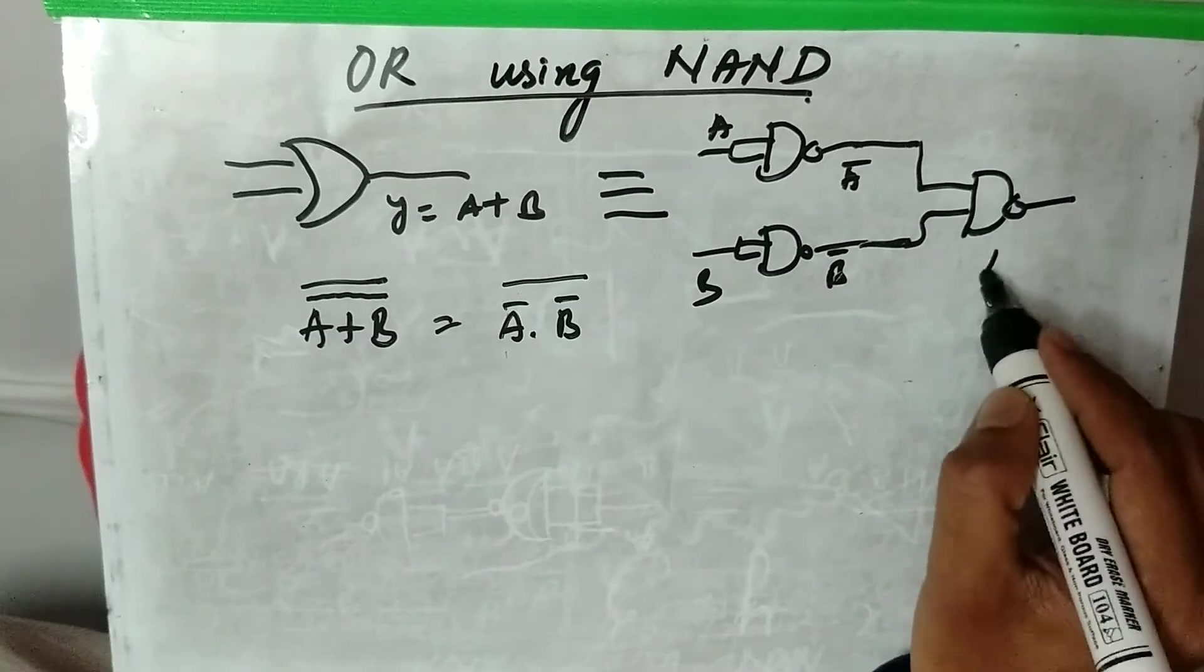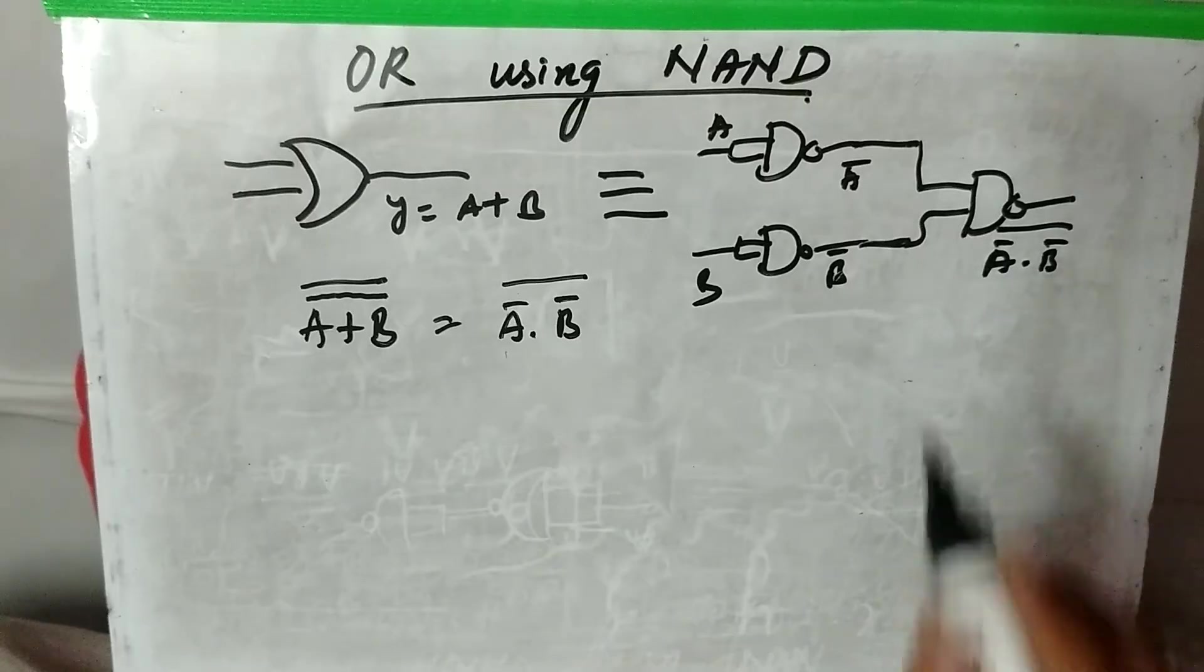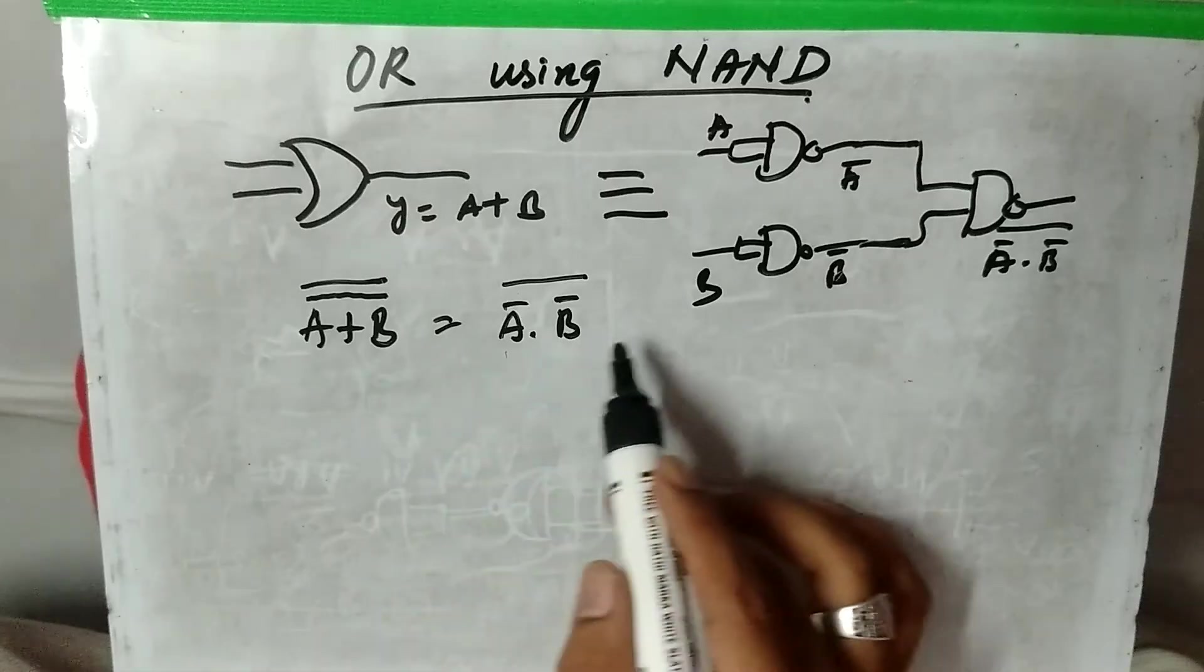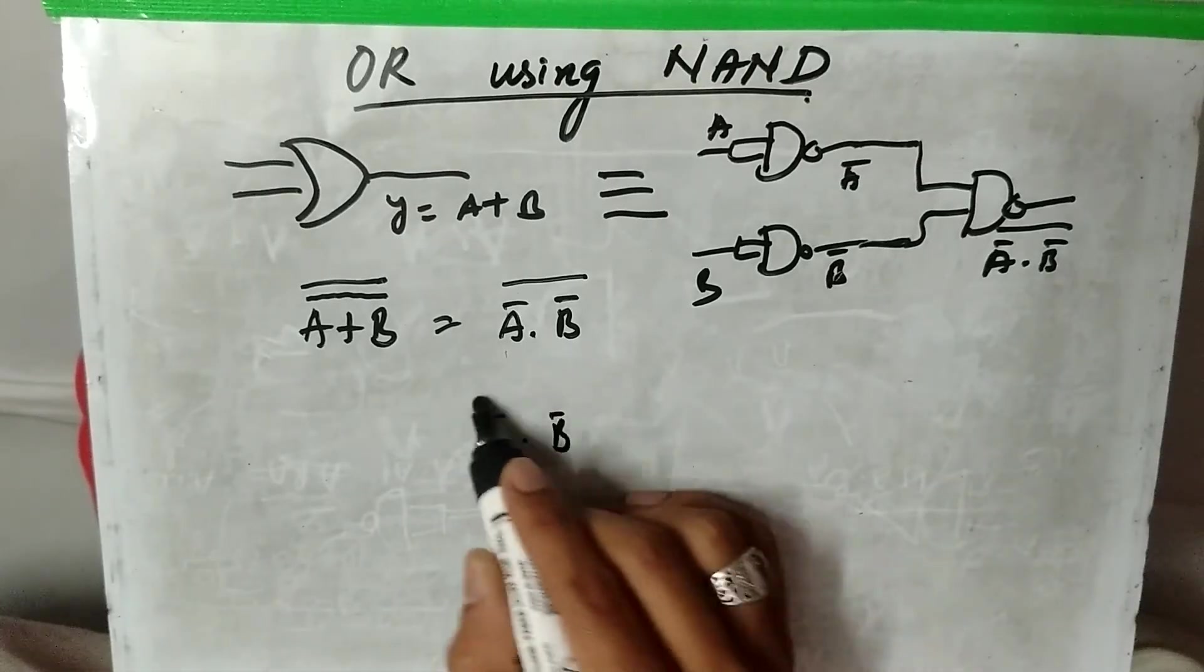So you will get A bar dot B bar whole bar. This is the output of the NAND gate, which is equivalent to A bar dot B bar whole bar.